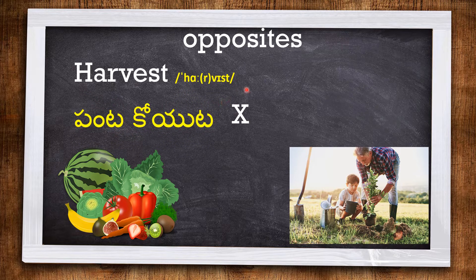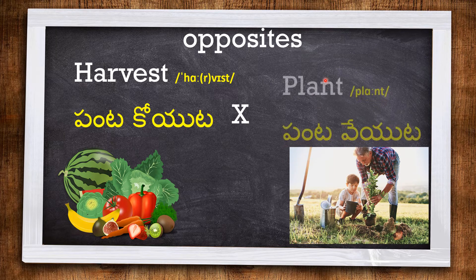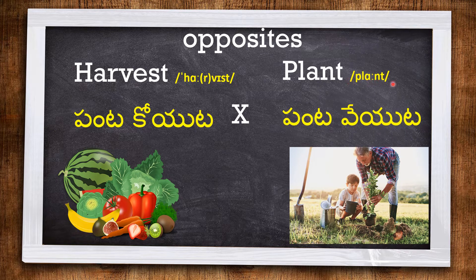HARVEST means to reap crops. Here you can see some harvested vegetables. And the opposite of HARVEST is PLANT. This man is sowing some plants along with his son.